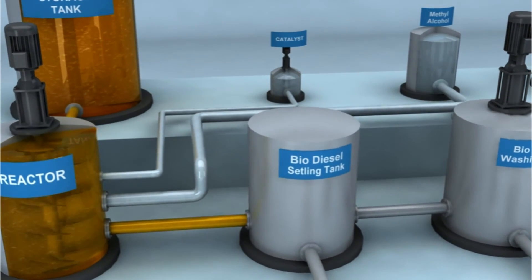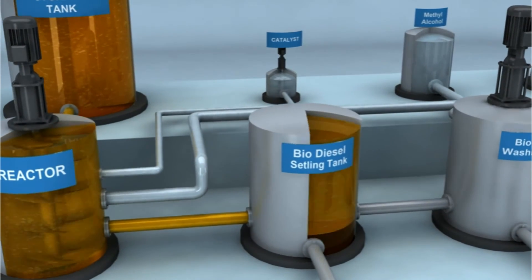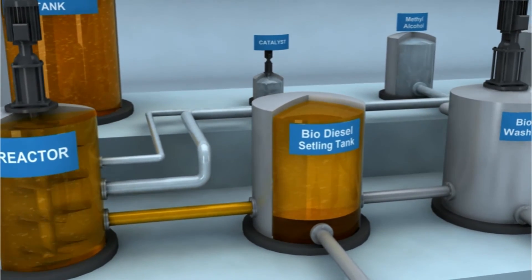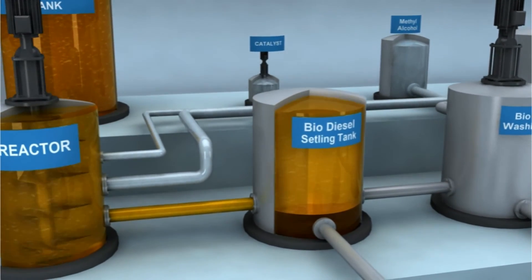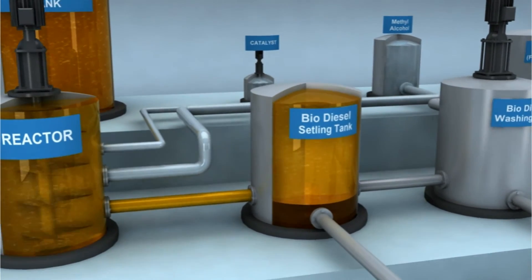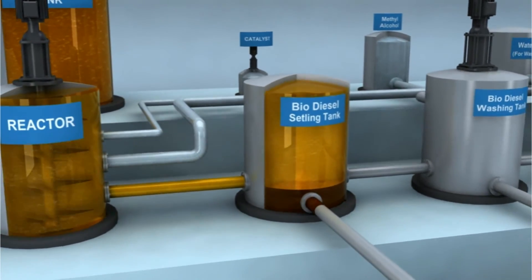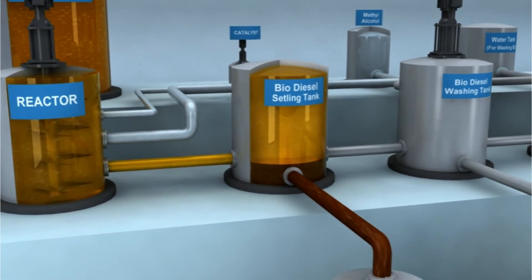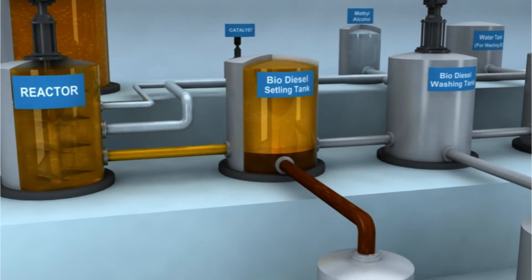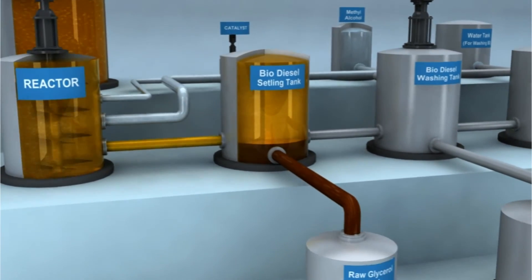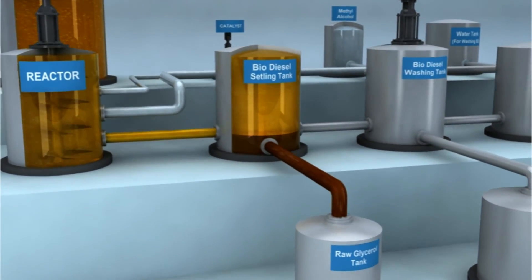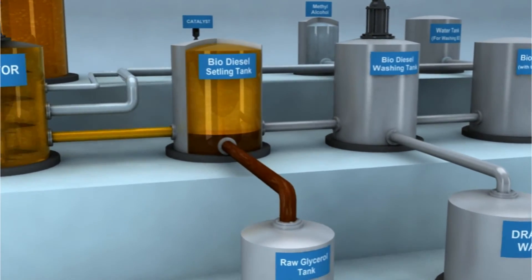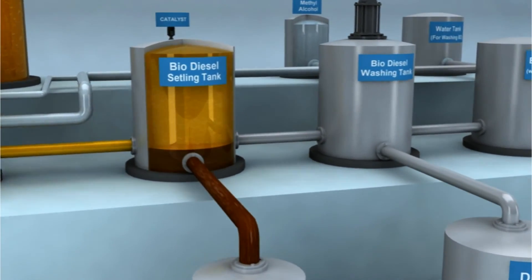After the reaction is complete, the biodiesel is transferred into a settling tank. The lower layer, which comprises glycerol and soap, is collected from the bottom of the settling tank. Glycerin along with any soap settles at the bottom due to its higher density compared to biodiesel.